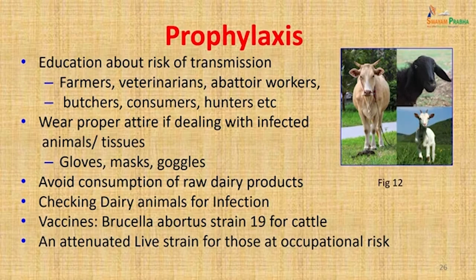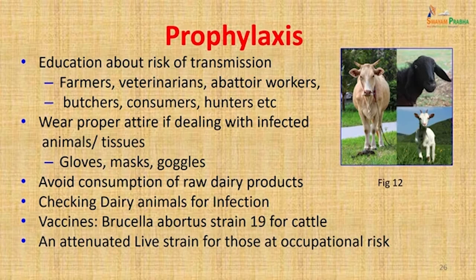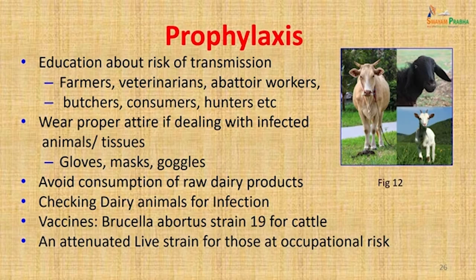To prevent brucellosis, education about transmission risk is essential for farmers, veterinarians, abattoir workers, butchers, hunters, and consumers of dairy products. They must wear gloves, masks, and goggles when dealing with animals or their discharges. Raw dairy products should be avoided, dairy animals should be checked for infection, and vaccines given to animals — Brucella B19 strain for cattle is available. Vertical transmission from mother to child and sexual transmission have also been documented, so veterinarians' partners presenting with fever should be tested for Brucella antibodies.